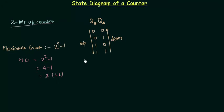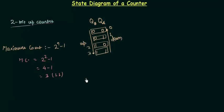Now we will move to the state diagram. The states are nothing but the counts of my counter. The counts are 0 0, which is equivalent to 0 in decimal; 0 1 equivalent to 1; 1 0 equivalent to 2; and 1 1 equivalent to 3. So these are my states.